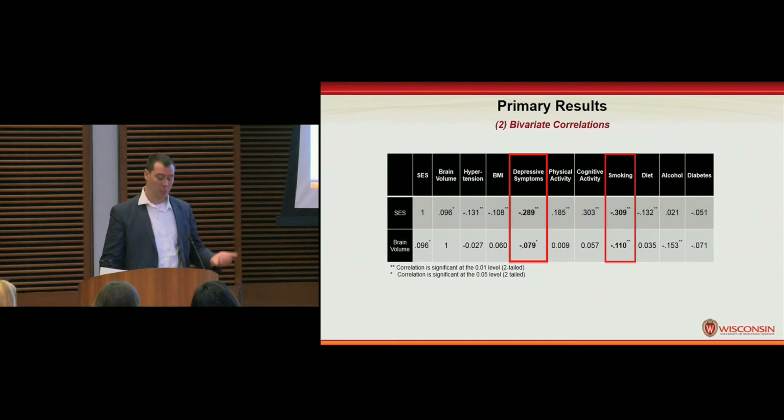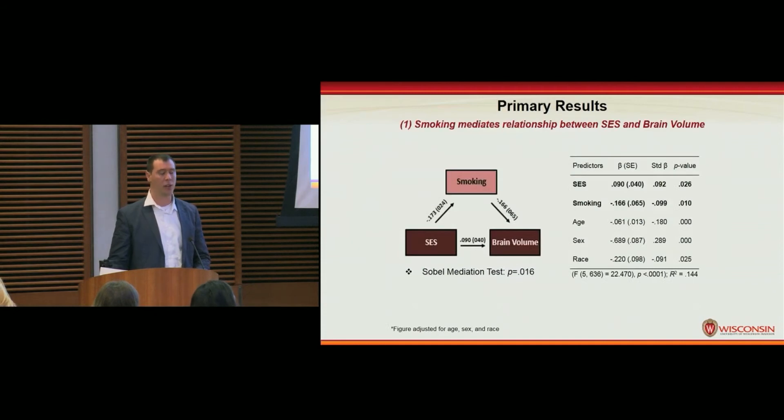Greater depressive symptoms were associated with lower SES and lower brain volume. Similarly, greater smoking was associated with lower brain volume and lower SES as well. When we plugged these potential mediators into our models, we determined that smoking was significantly mediating the relationship between SES and brain volume, however depressive symptoms were not.